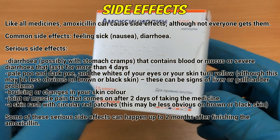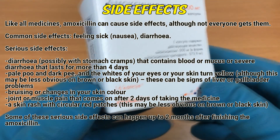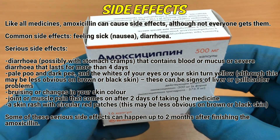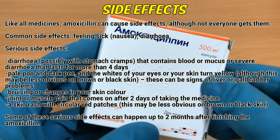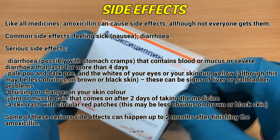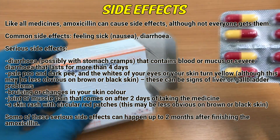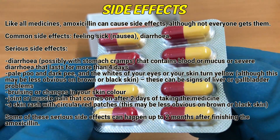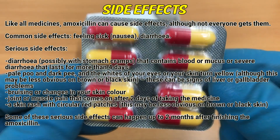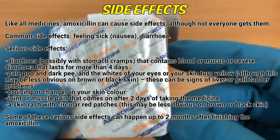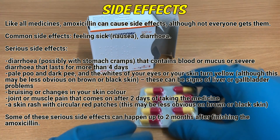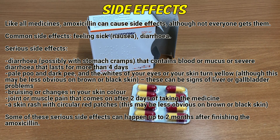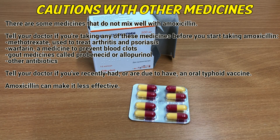Serious side effects include: diarrhea possibly with stomach cramps that contains blood or mucus, or severe diarrhea lasting more than 4 days; pale stools and dark urine, or yellowing of the whites of your eyes or skin — this may be less obvious on brown or black skin — which can be signs of liver or gallbladder problems; breathing changes or change in skin color; joint or muscle pain that comes on after 2 days of taking the medicine; a skin rash with circular red patches, which may also be less obvious on brown or black skin. Some of these serious side effects can happen up to 2 months after finishing the amoxicillin.